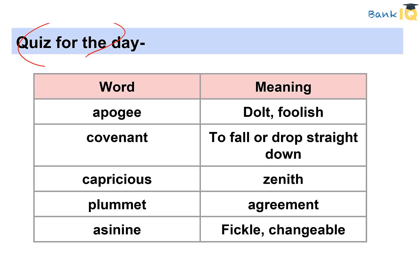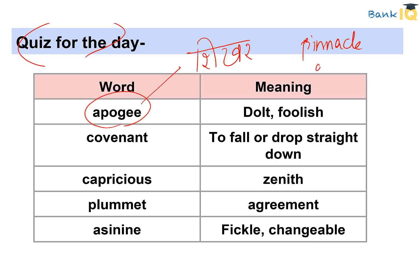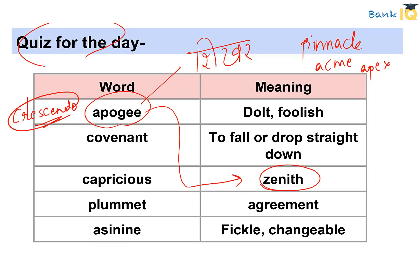Moving on to the quiz of the day — we have 5 words to match. The word 'Apogee' means the highest point of development of something. An important synonym is 'pinnacle.' You can also use 'acme,' 'apex,' 'zenith,' 'capstone,' or 'crescendo.' Zenith is the highest point of something. These are all important synonyms for Apogee to remember.